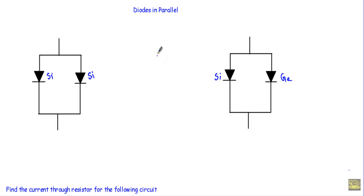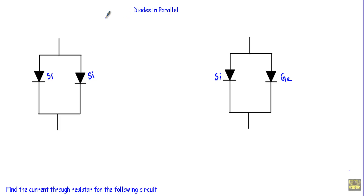In this video I will talk about circuits in which diodes are connected in parallel. I will also show two examples with diodes connected in parallel. While connecting two or more diodes in parallel, you have to remember that we cannot connect two dissimilar diodes in parallel.